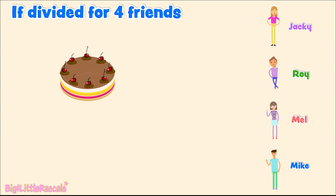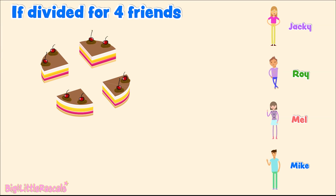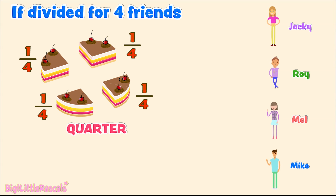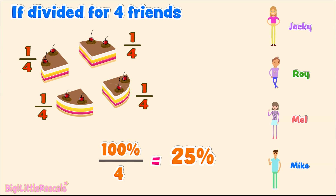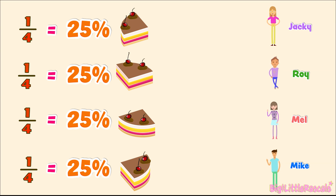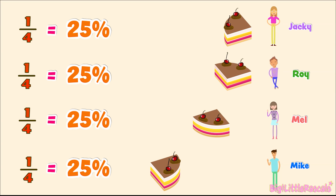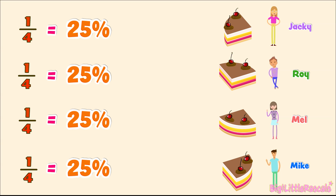But if we want to divide the cake among 4 friends, then we need to divide the cake into 4 equally. So each friend receives a quarter of the cake. And how do we say a quarter in percentage? 100% divided by 4 equals 25% — a quarter in percentage is 25%. So each friend — Jackie, Roy, Mel, and Mike — each of them receives a quarter of the cake, or 25% of the chocolate cake. Got it?